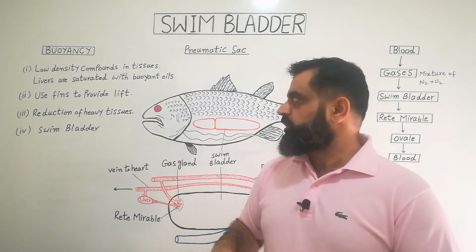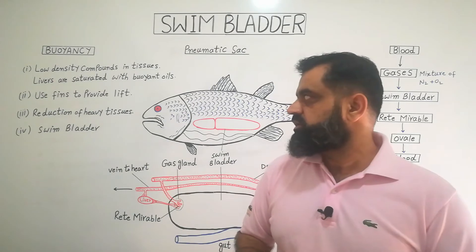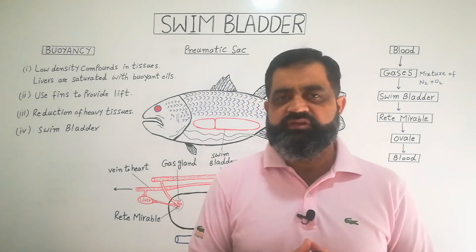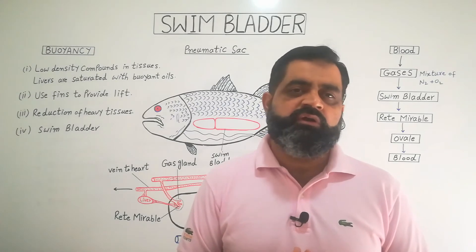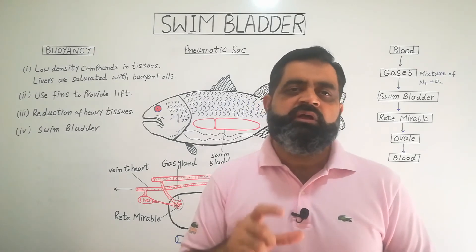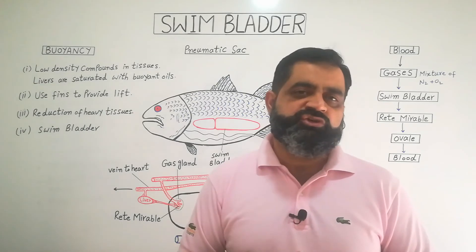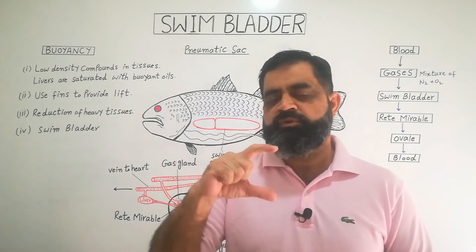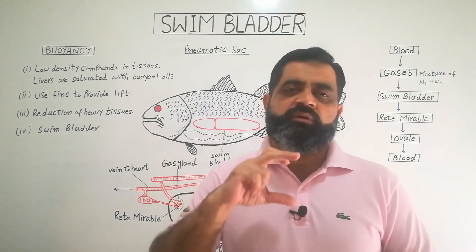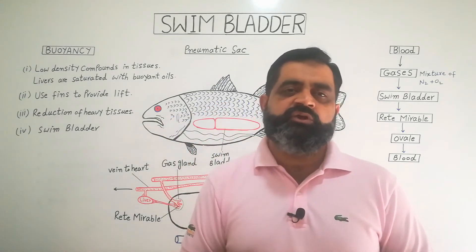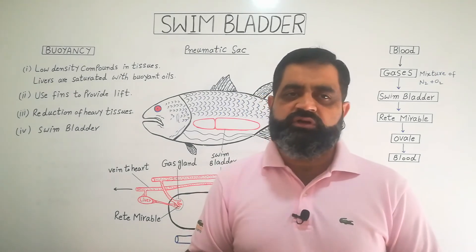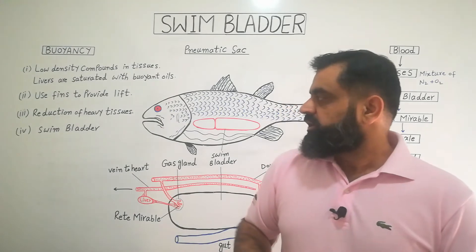The second adaptation is fins. Certain fishes have modified fins to stay in water, either floating or sinking. If you look at the caudal fin — the tail fin — of a shark, it has two lobes: the upper lobe and the lower lobe. The upper lobe is larger while the lower lobe is a little bit shorter. The upper lobe helps the fish navigate in water and to sink and float easily.